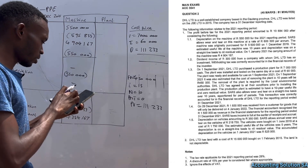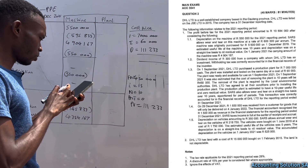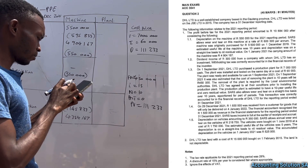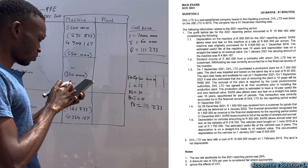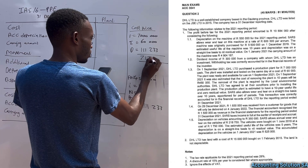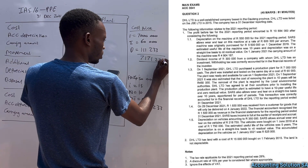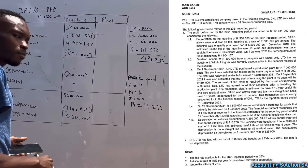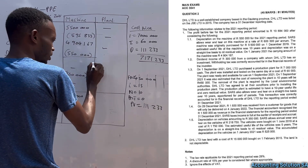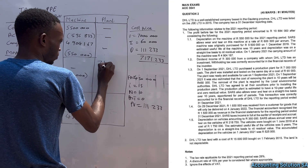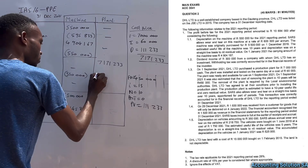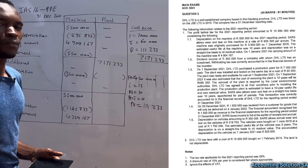Note: if you were doing a journal entry, you would also be required to calculate the interest, but we are only focusing on what is needed for the PPE note. Now we can calculate total cost price: 7,000,000 plus 60,000 plus 111,233 equals 7,171,233. Since this plant was purchased during the year and was not there at the beginning, it is an addition of 7,171,233.